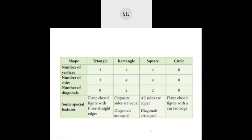A rectangle is also a plane closed figure with four straight edges. A square has four vertices, four sides, and two diagonals; all four sides are equal and both diagonals are equal — it is a plane closed figure with four straight edges. A circle has zero vertices, zero sides, and zero diagonals; it is a plane closed figure with a curved edge.